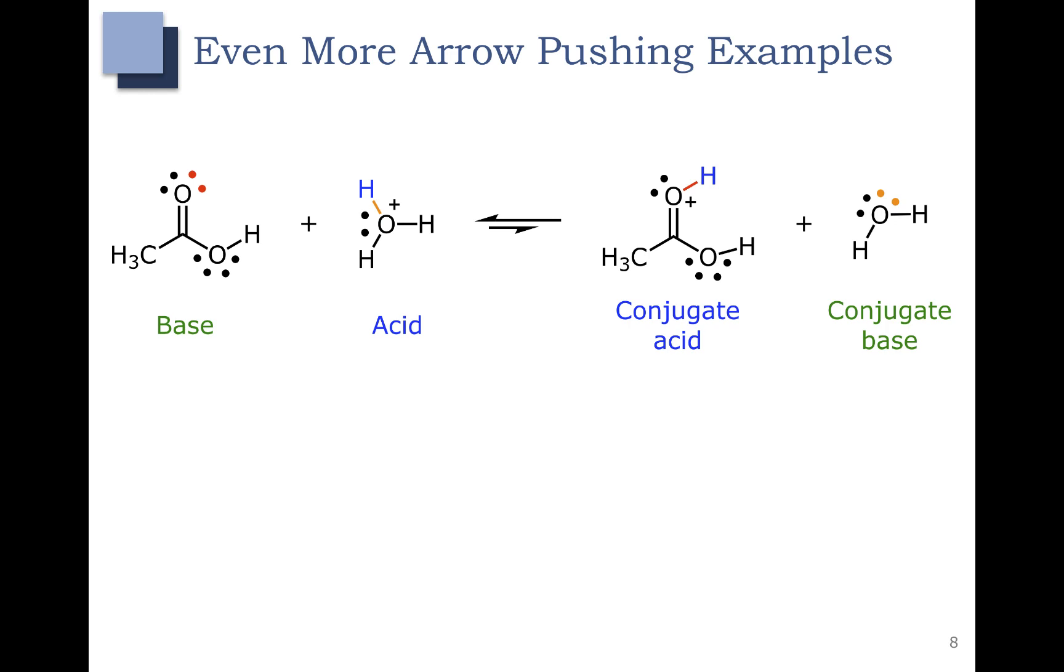Let's look at some more arrow pushing examples. In this example here, we have a carboxylic acid on the left, which is picking up a proton from our acid. If we draw the electrons, you can see the red pair of electrons is coming over there, and forming a bond to that hydrogen. That becomes the red bond shown over on the right. When we do that, we have to break a bond. So the hydrogen oxygen bond, those electrons are going to go to the oxygen, and they become the orange lone pair on the right.